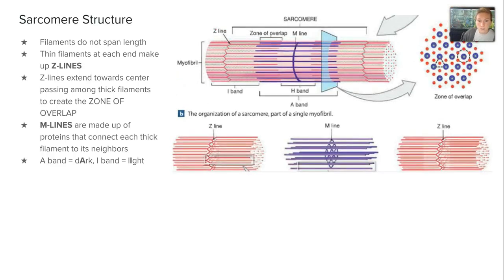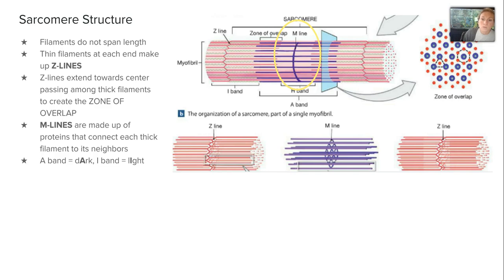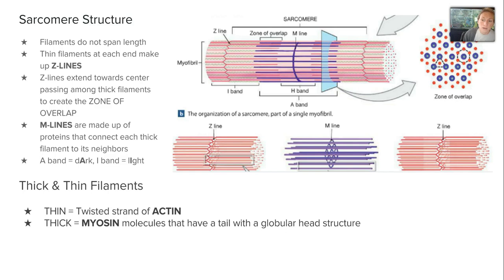Taking a closer look at sarcomere structure: unlike other parts of the structure, these filaments do not span the entire length of the muscle fiber. Thin filaments at each end make up Z lines, which extend toward the center and pass thick filaments to create a zone of overlap. M lines are made up of proteins that connect each thick filament to its neighbor. The A band represents a dark band and the I band represents a light band — the combination of these dark and light bands forms the striations visible on skeletal muscle.